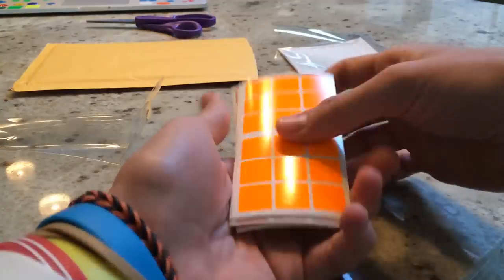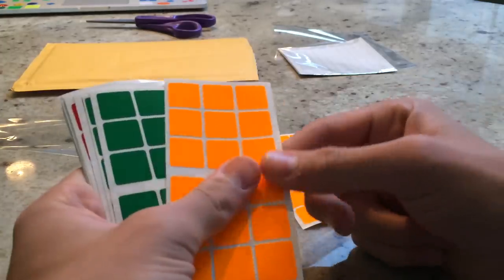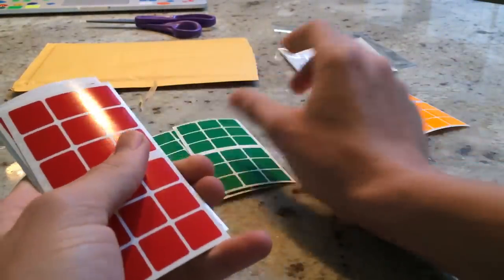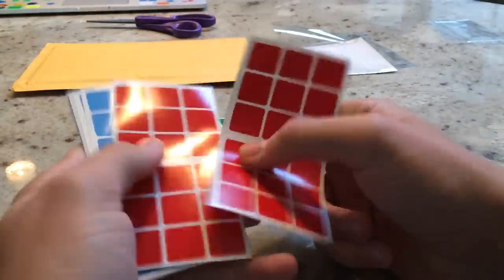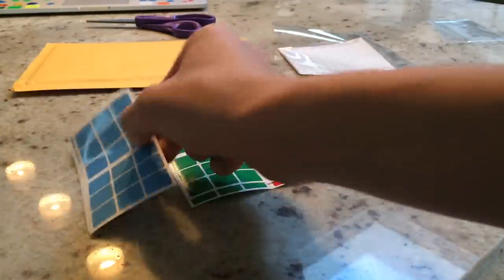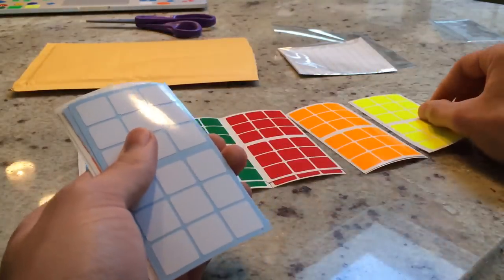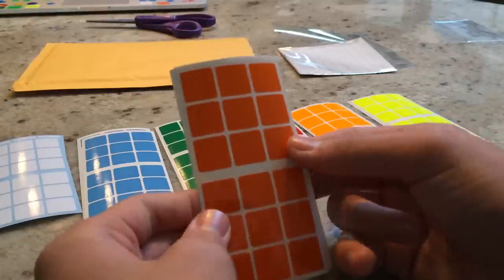So here we have light orange, two sets of those, we have two sets of green, regular green, two sets of regular red, a light blue, a fluorescent yellow, and a white, and also regular orange.